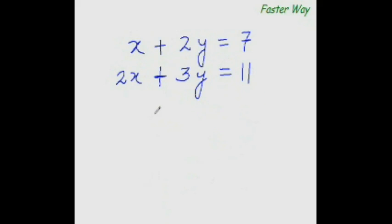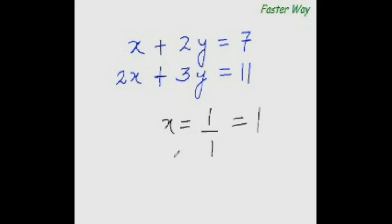Now let's solve another example using the crisscross technique. To find x, multiply this 2 with 11 and subtract the product of this 3 and 7. So 2 times 11 is 22, minus 3 times 7 is 21. 22 minus 21 is 1 — this is the numerator. For the denominator: 2 times 2 is 4, and 1 times 3 is 3. 4 minus 3 is 1. So x equals 1.